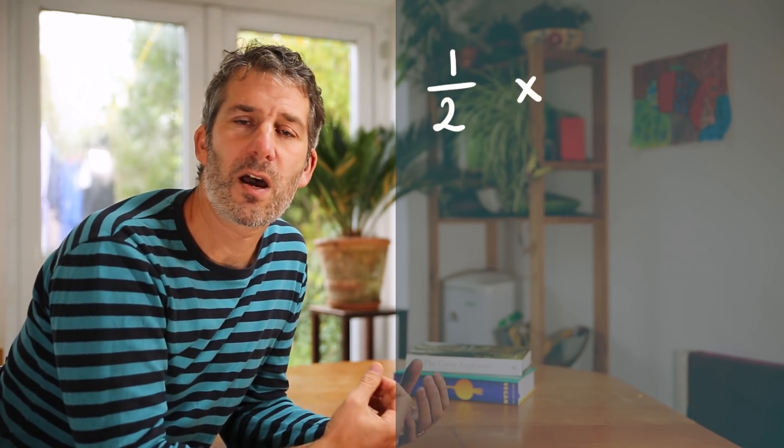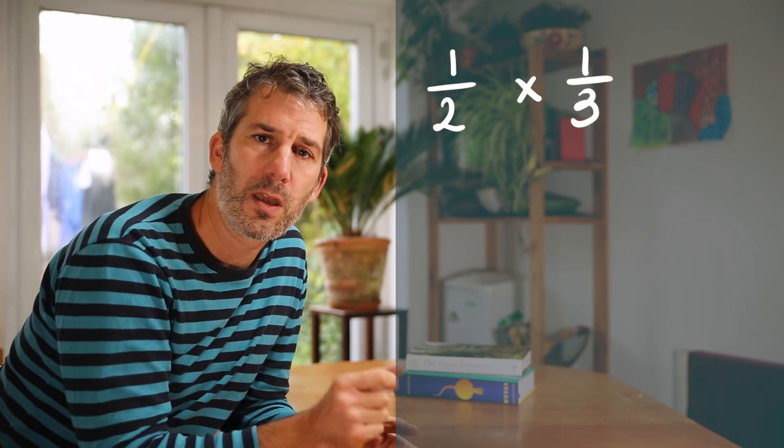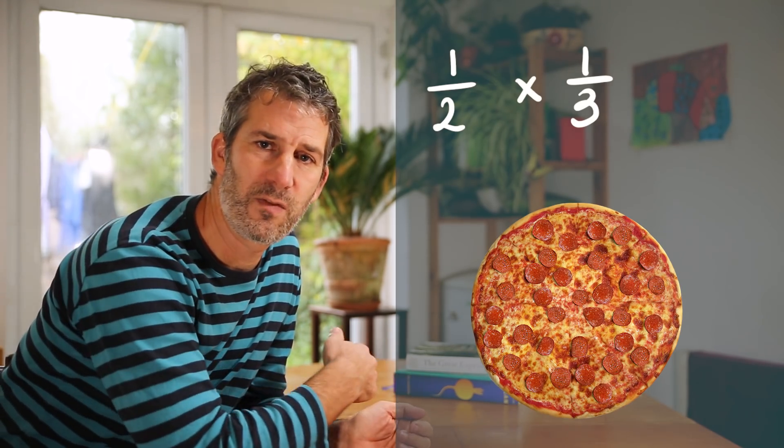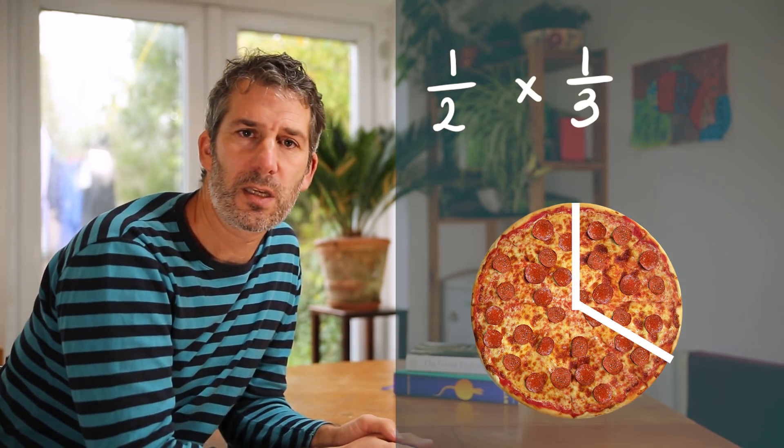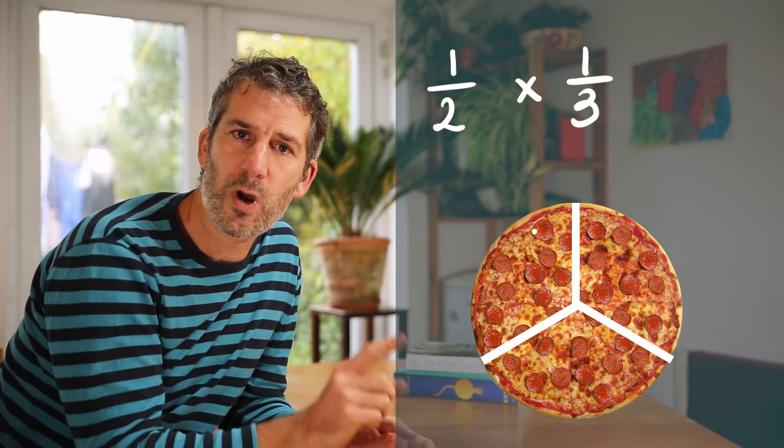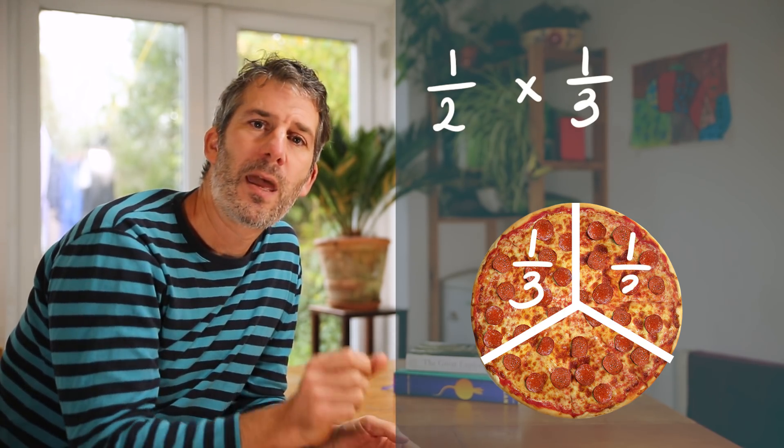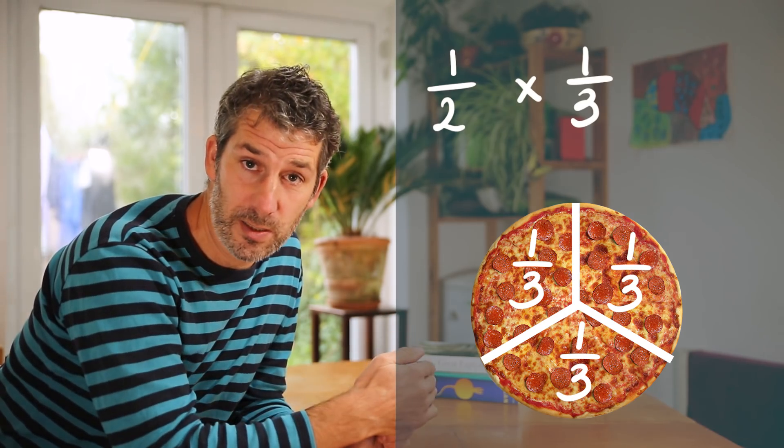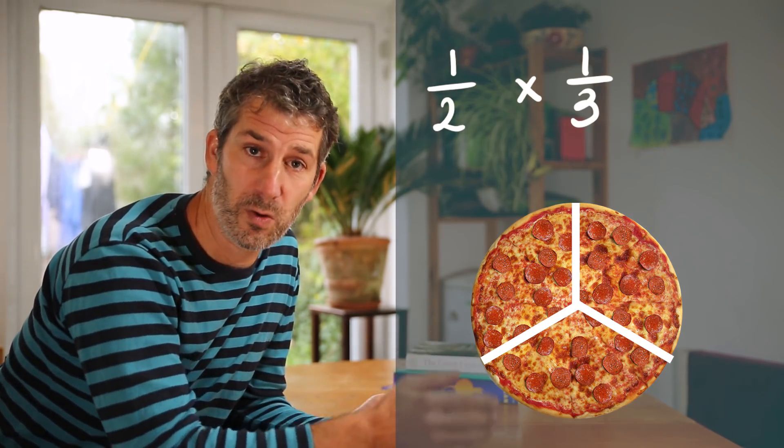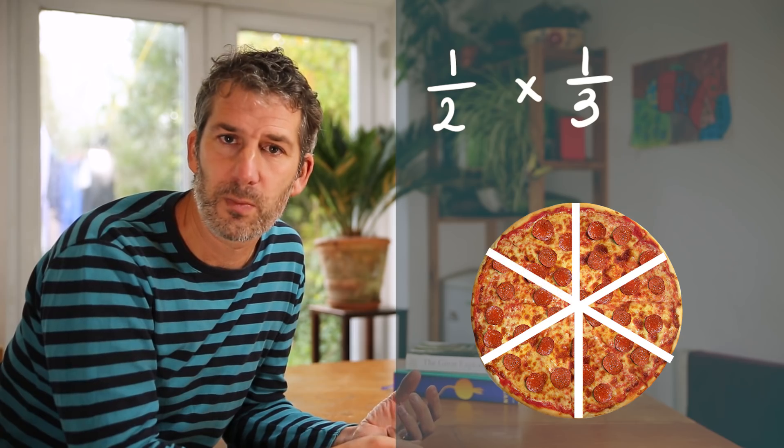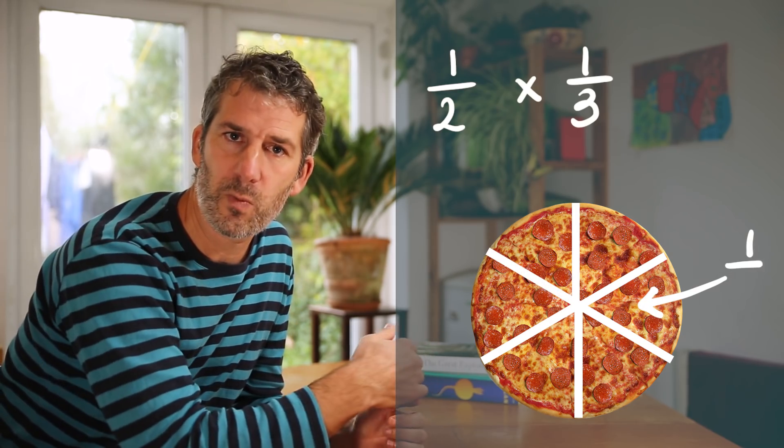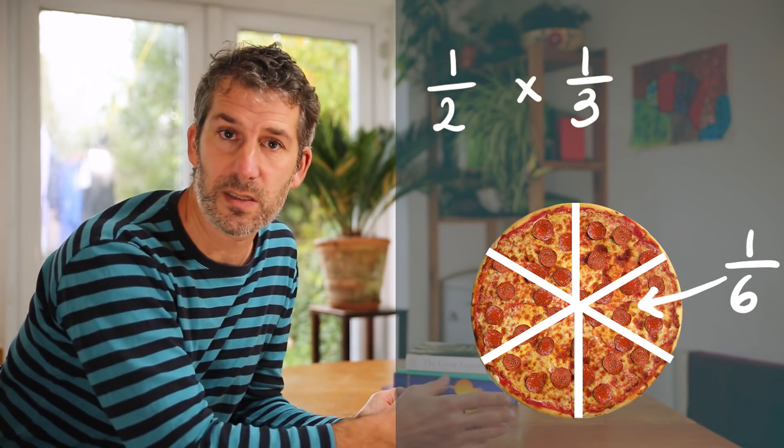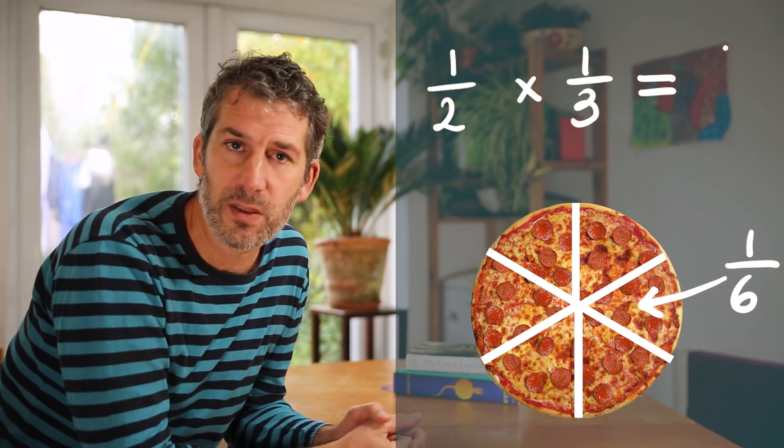Let me show you another example. This time we're going to work out a half times a third. In other words a half of a third. If we think of our pizza divided into three parts, each of those parts is one third of the whole pizza. And to find a half of a third we can imagine those thirds being divided in two. Because to find half of something you divide it by two. So we end up with six pieces or sixths. So half times a third is one sixth.